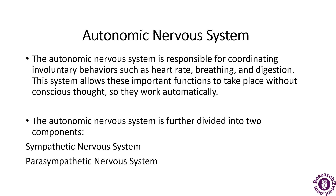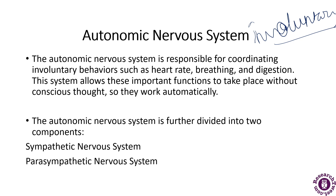The autonomic nervous system is the neural system involved in involuntary actions, such as the regulation of physiological functions — for example, breathing, heart rate, and digestion. It allows these important functions to take place without conscious effort, working automatically. It has been further divided into two parts: the sympathetic nervous system and the parasympathetic nervous system.